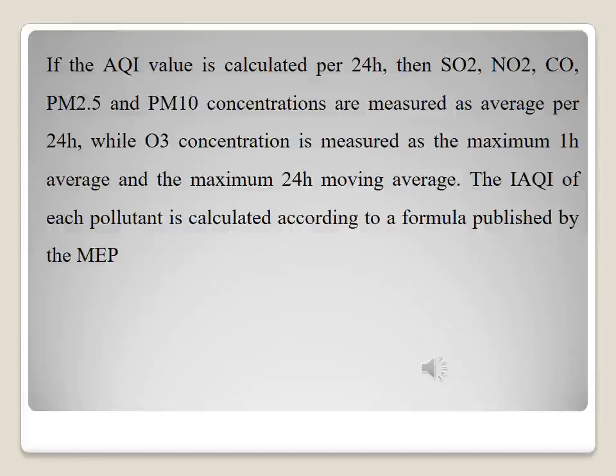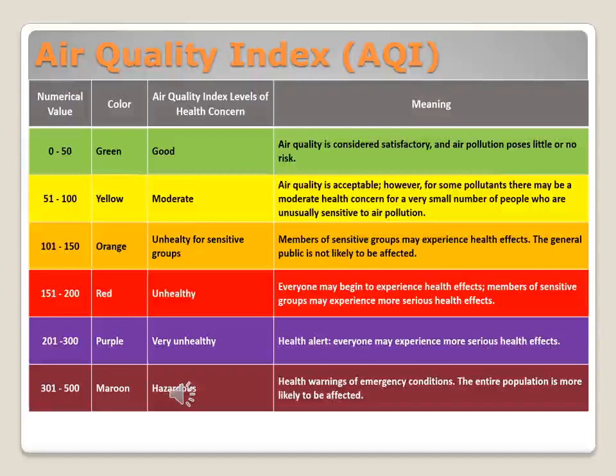The individual AQI of each pollutant is calculated according to a formula published by the MEP. This table provides a ready reference of Air Quality Index values. The green color shows particulate matter from 0 to 50, meaning the community lives in a healthy environment. Other color regions show different particulate matter values and the corresponding air quality properties.